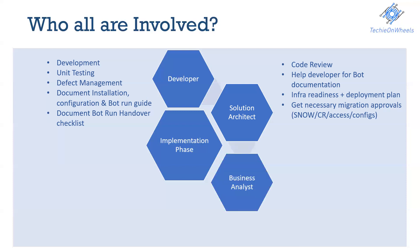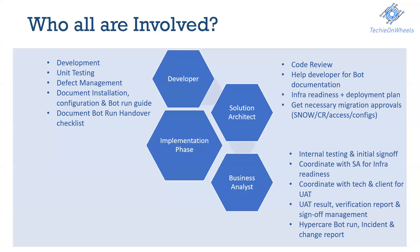The third person who plays a critical role in the implementation phase is the business analyst. The developer develops the code, does unit testing, and confirms the code is ready. Following best practices, the business analyst should review the bot trend and do internal testing before going into the UAT testing with the client. This helps gain better client confidence and confirms the solution is working as expected and as drafted in the PDD. That internal testing and initial sign-off is given by the business analyst, though in some organizations it goes directly to UAT.